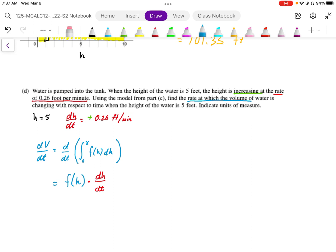So once we've done that, we can then just evaluate this. We want to know the dV by dt at h equals 5.